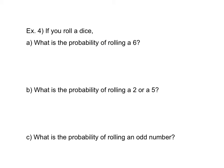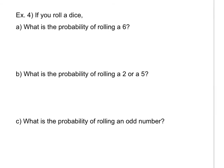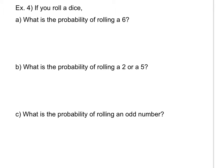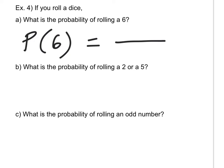Let's look at another example. If you roll a dice, what is the probability of rolling a six? We write: probability of a six, P(6). If I want to roll a six, how many ways could I win? There are six possible outcomes — one, two, three, four, five, or six — and only one of those gives me a six. So the probability is one over six.